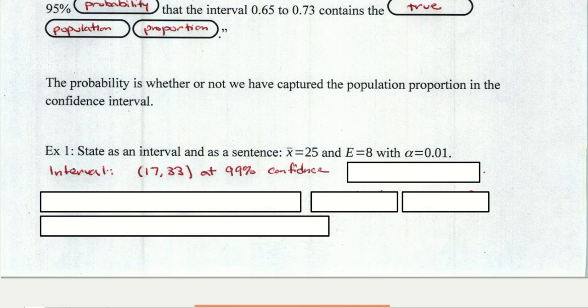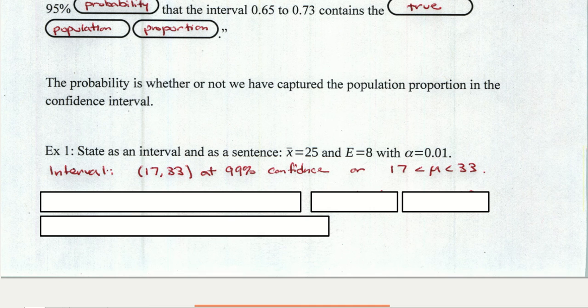Now that's our interval. We say that that has a 95, or excuse me, 99% confidence, right? That's the complement of alpha. Similarly, we could write this as an inequality where 17 is the lower bound and that's less than or equal or less than the population mean mu less than 33. Now notice that we knew to use mu because we were given a sample statistic of X bar equals 25. X bar is the sample mean. So we're making a claim about the population mean mu.